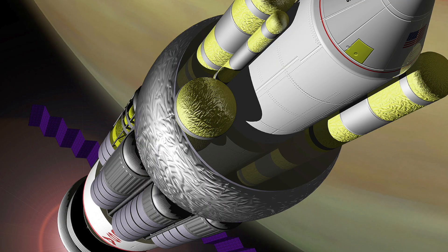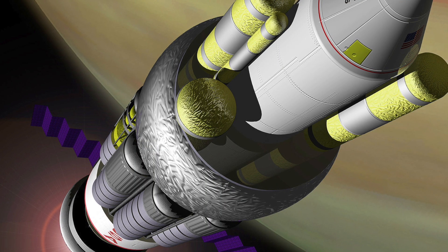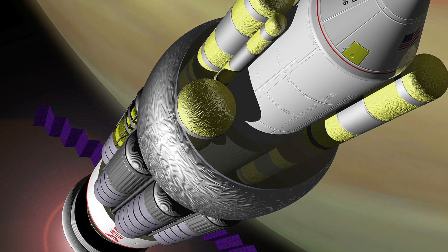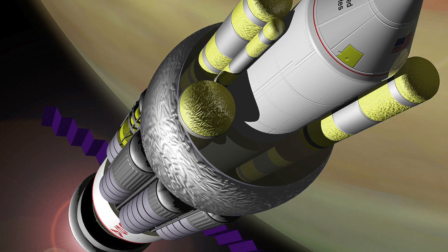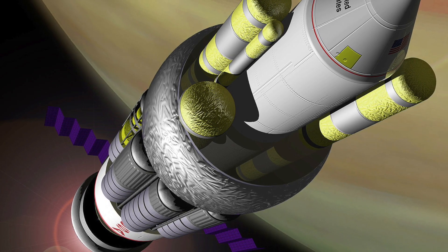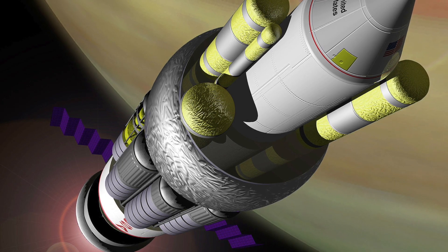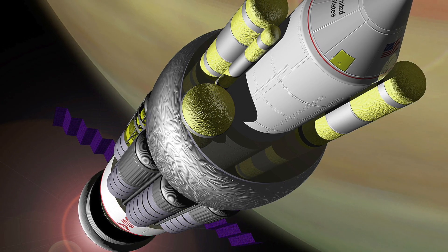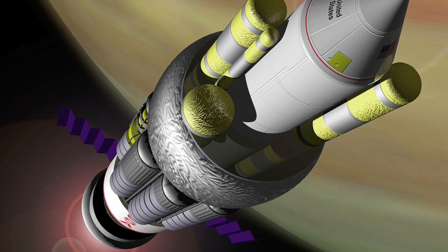Project Daedalus, a concept by the British Interplanetary Society in the 1970s, aimed to create a robotic interstellar probe traveling at 12 percent of the speed of light to Barnard Star. Similarly, in 1989, the U.S. Navy and NASA explored a comparable concept called Project Longshot. These projects, unlike Orion, require significant advancements in fusion technology and are not currently feasible.